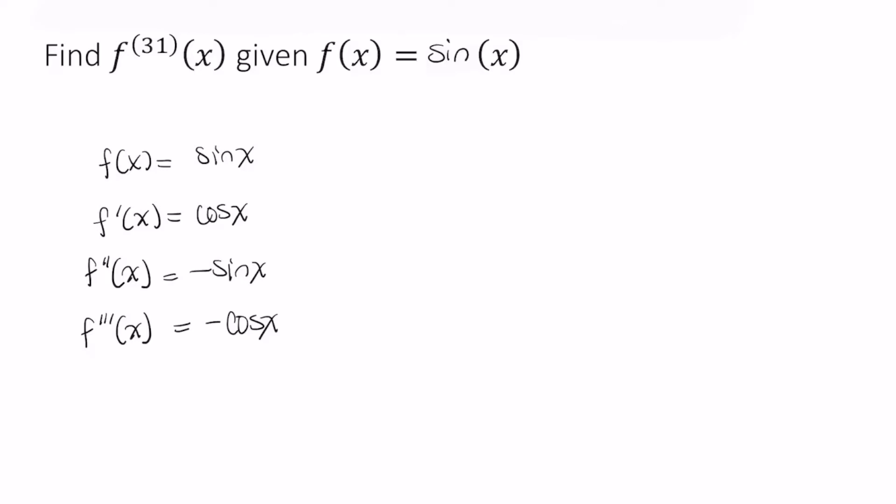Rather than count 1, 2, 3, 4, 5, 6, 7, 8, all the way to 31, there is an easier way. We know there are four parts to this pattern, and we want the 31st derivative. So it suffices to divide 31 by 4.